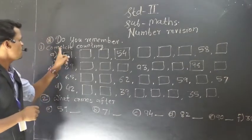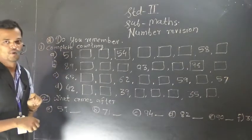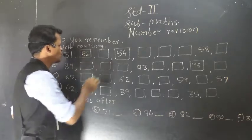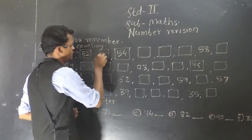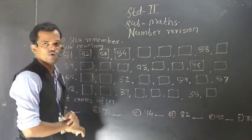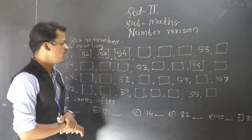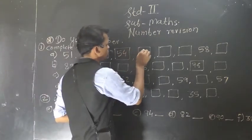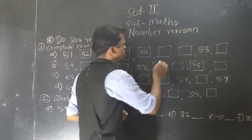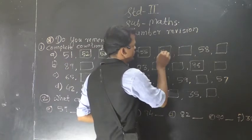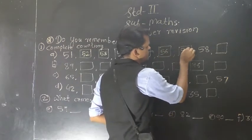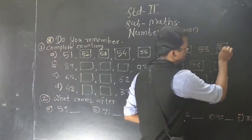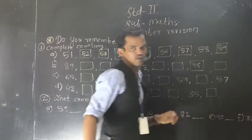So after 51, 52 comes. So I am writing here 52, 53 — 54 is already given. Then after 54: 55, then 56, 57, 58, 59. Understood?